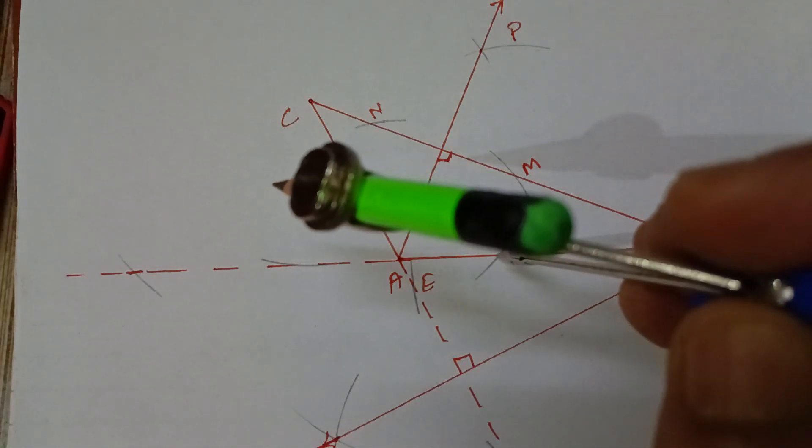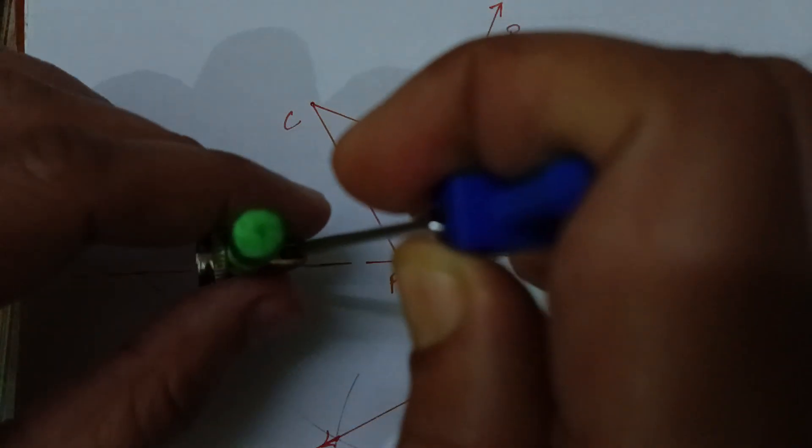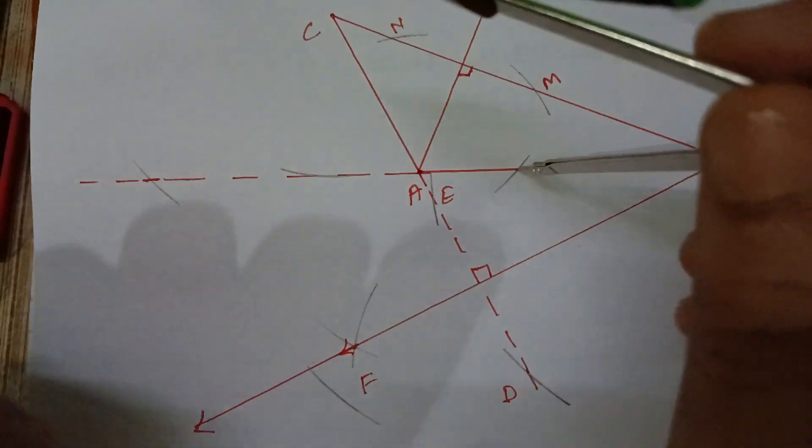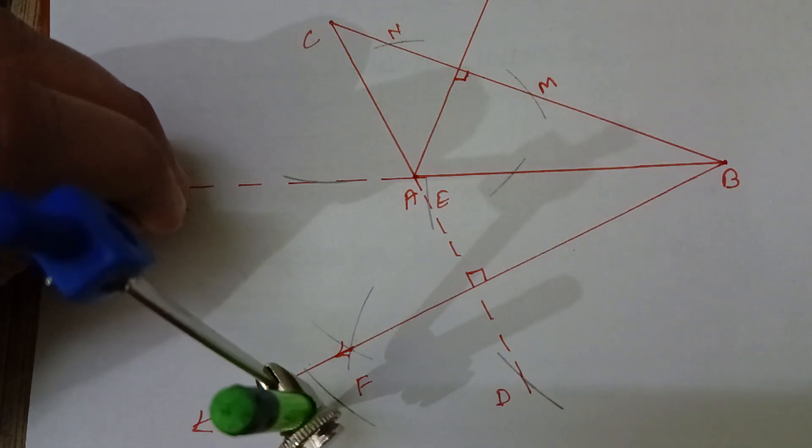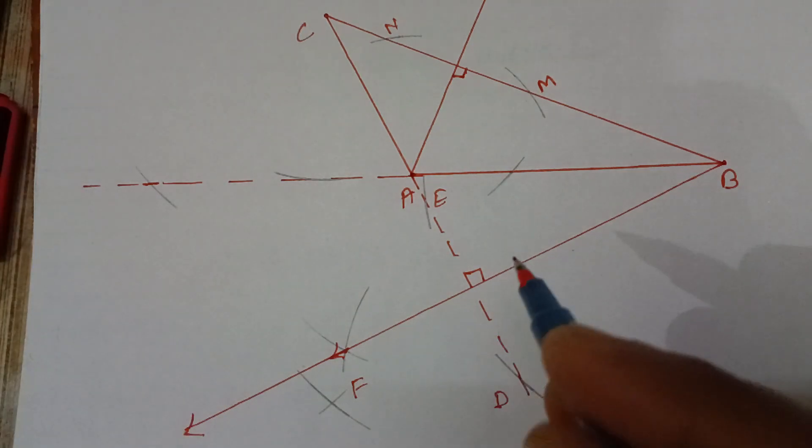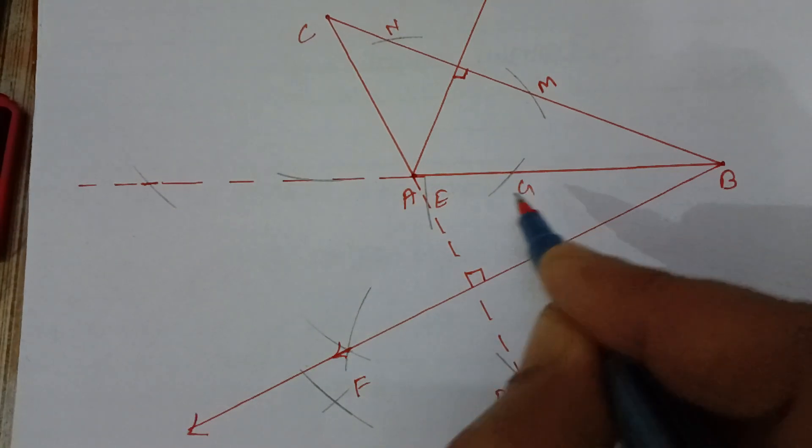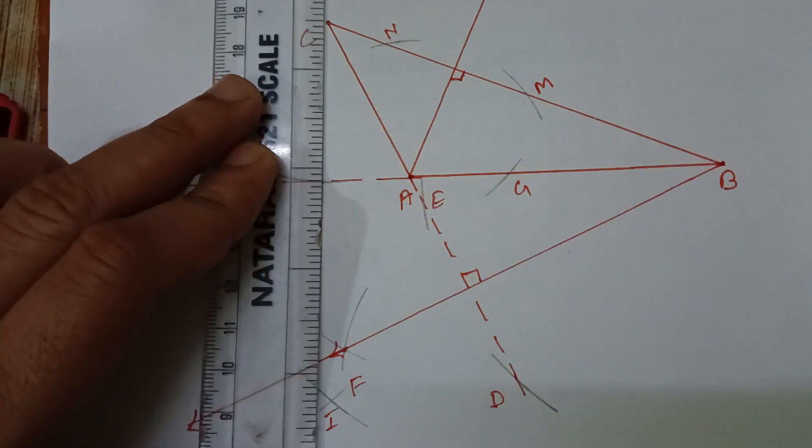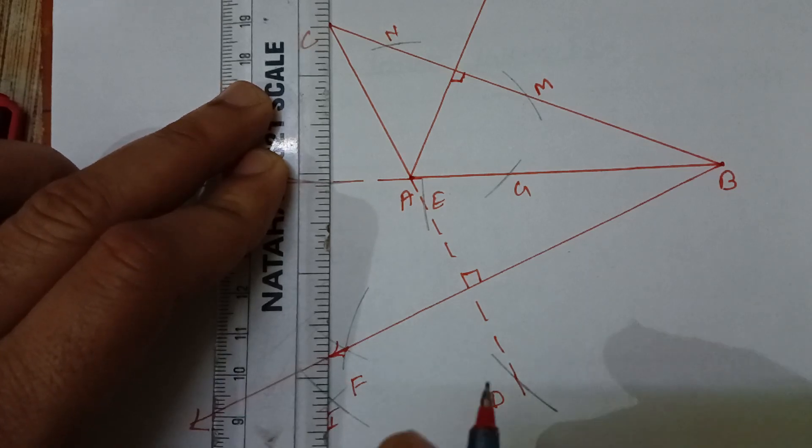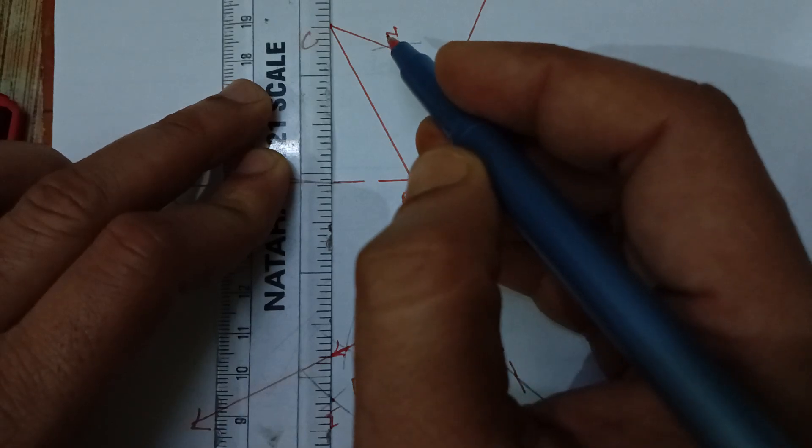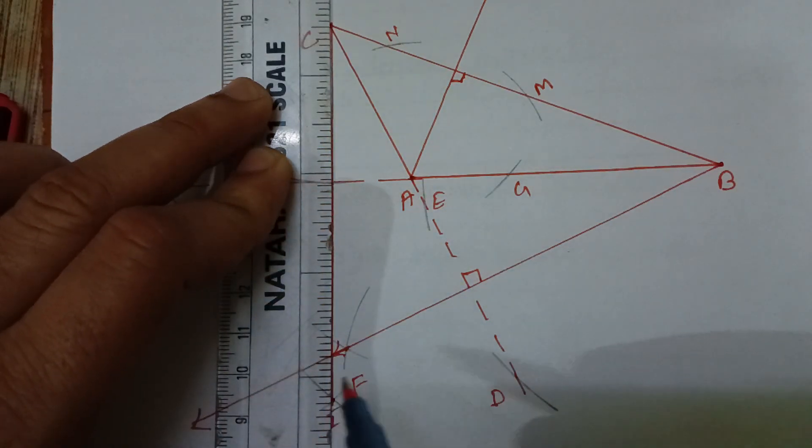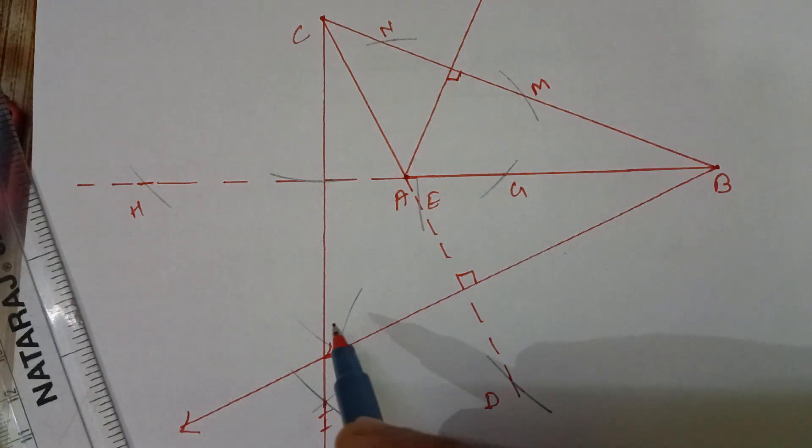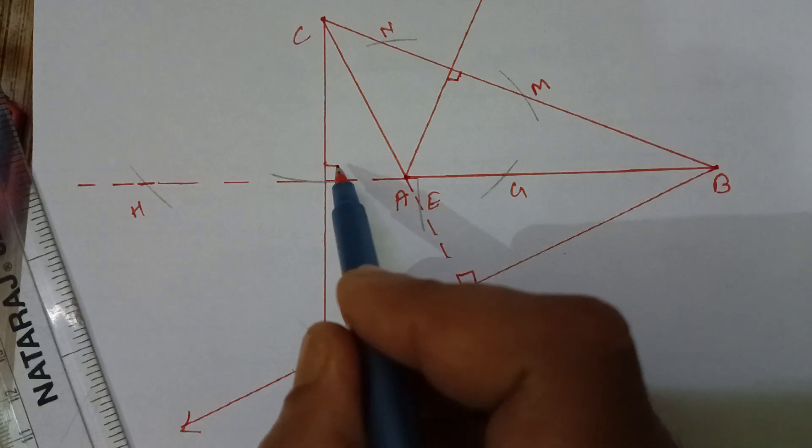Again, take more than half, take more than half of this distance and arc here. And from this, cut it. This and give the name here, G and I. Now join C to I. Here, this C-I is the perpendicular on side AB.